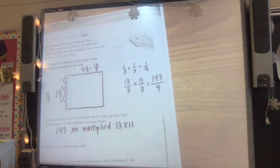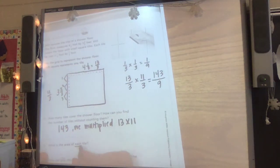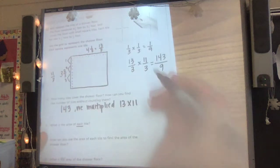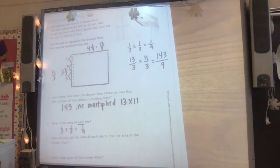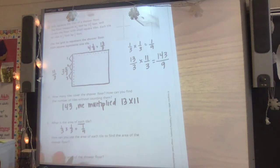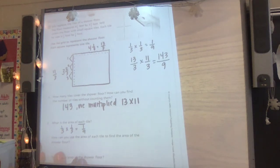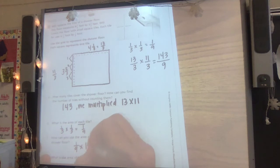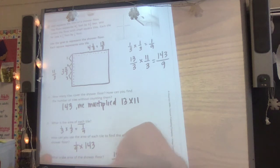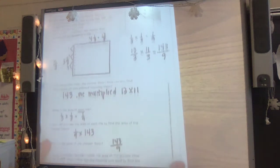What is the area of each tile? One little tile's area — length times width — is one ninth. How can you use the area of each tile to find the shower floor area? You find the area of one tile and multiply it by how many you have, and it is 143 ninths, just like we figured out.